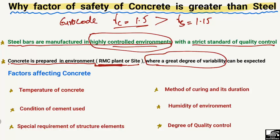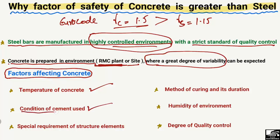The factors affecting concrete strength that lead us to take a higher factor of safety include: first, the temperature of the concrete — differences in temperature between the concrete and the outside environment can change the concrete strength. Second, the condition of the cement used — if the cement condition changes from when it is produced in the factory to when it is mixed, it can affect the strength of the concrete.